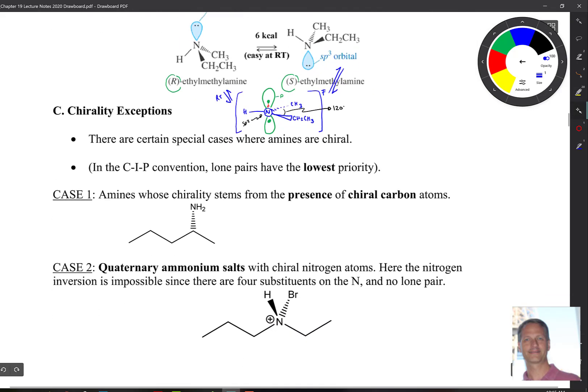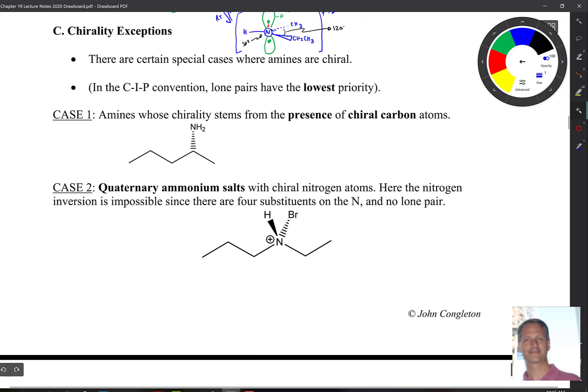There are some exceptions. We use the Cahn-Ingold-Prelog convention, which says that lone pairs have the lowest priority. When we look at this first molecule, this is a case where we have a stereocenter, but this one's easy because the stereocenter is here, not part of the nitrogen. The first case is amines whose chirality stems from the presence of chiral carbon atoms. When you figure out the stereocenter, that turns out to be R. You get 1, 2, 3, moving around this direction, the S direction, but number 4 is out, so we have to change our answer to R.